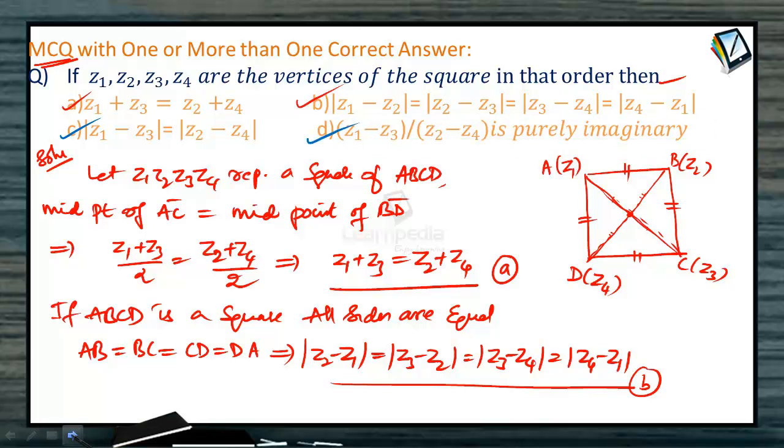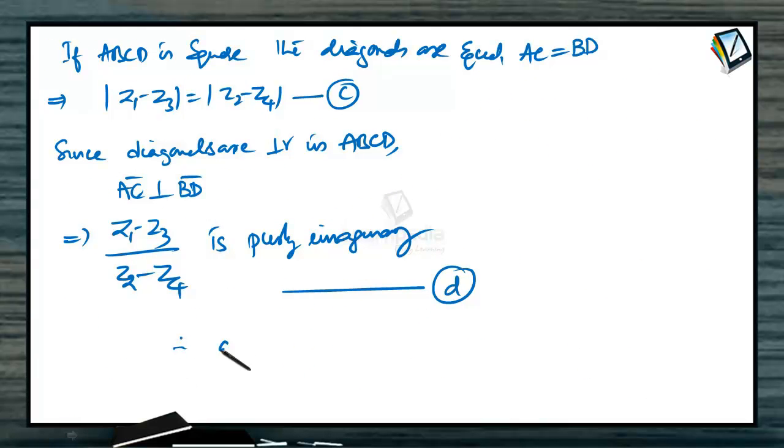So if ABCD is a square, then all options are going to be correct. That is A is correct, B is correct, C is correct, and D is correct for this problem. That is all for complex numbers, children.